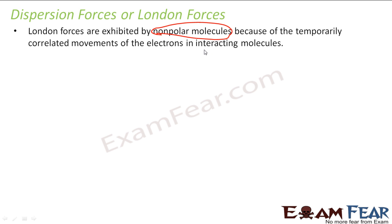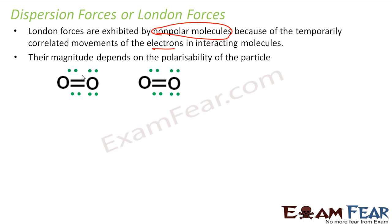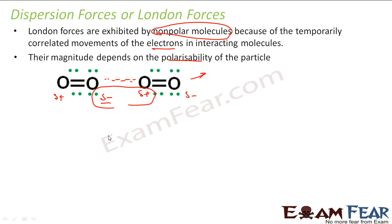London forces occur because of the temporary movement of electrons, and their magnitude depends on the polarizability of the particle. For example, in an O₂ molecule, the electrons move, causing one side to become slightly negative and the other slightly positive. This slight negative and slight positive charge creates a force of attraction — this is the London force. It is a very weak force, and its magnitude depends on the polarizability of the particles.